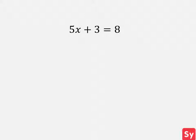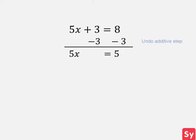We see that 3 is added to 5x, so to undo it, we subtract each side by 3. We add down and get 5x equals 5. Next, we want to undo the multiplicative step. We see that x is multiplied by 5, so in order to undo that step, we divide both sides by 5. Finally, we get x equals 1, our answer.